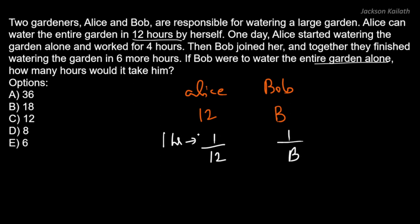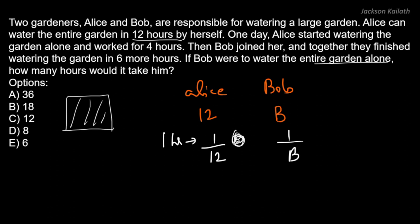Alice can do the entire garden in 12 hours, so in one hour she can do 1/12 of the garden. We are taking the work of watering the entire garden as one unit of work. If she can do this one unit in 12 hours, then in one hour she can do 1/12. Similarly, if Bob can do this in B hours, then in one hour he can do 1/B of the garden.